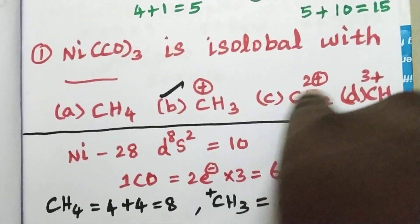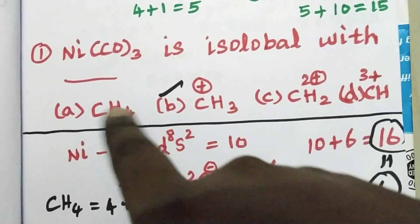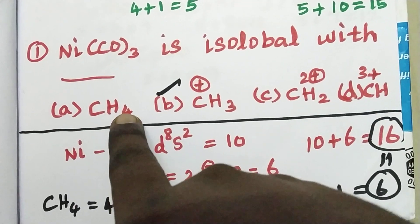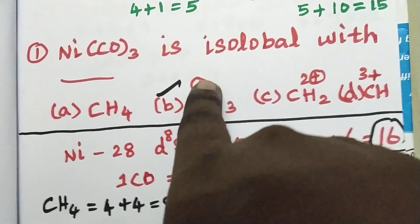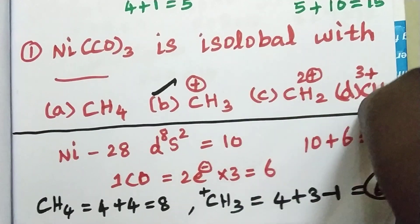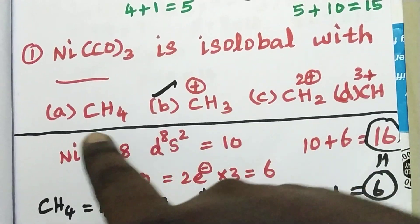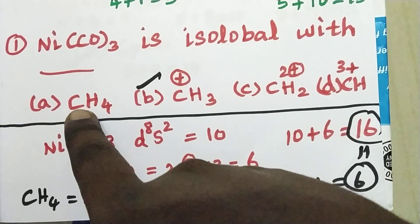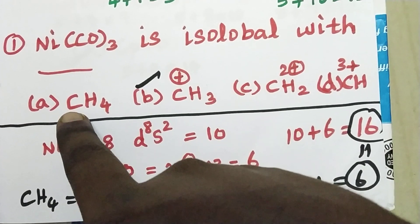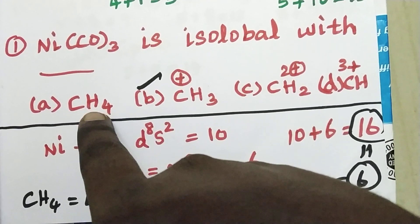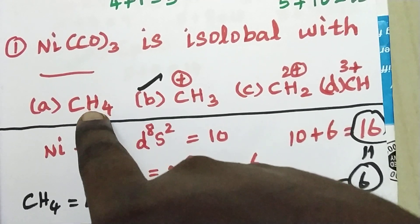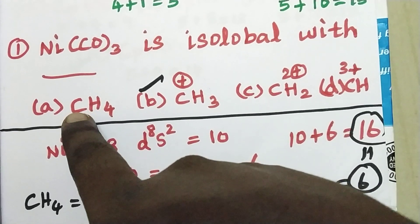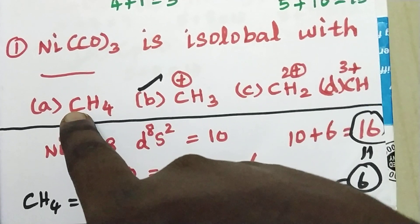Consider CH4. From that we derive CH3+, CH2 2+, and CH3+. By applying the electron counting: carbon contributes 4 electrons, each hydrogen contributes 1, so 4 hydrogens give 4 electrons. CH3+ has 4 plus 3 electrons.